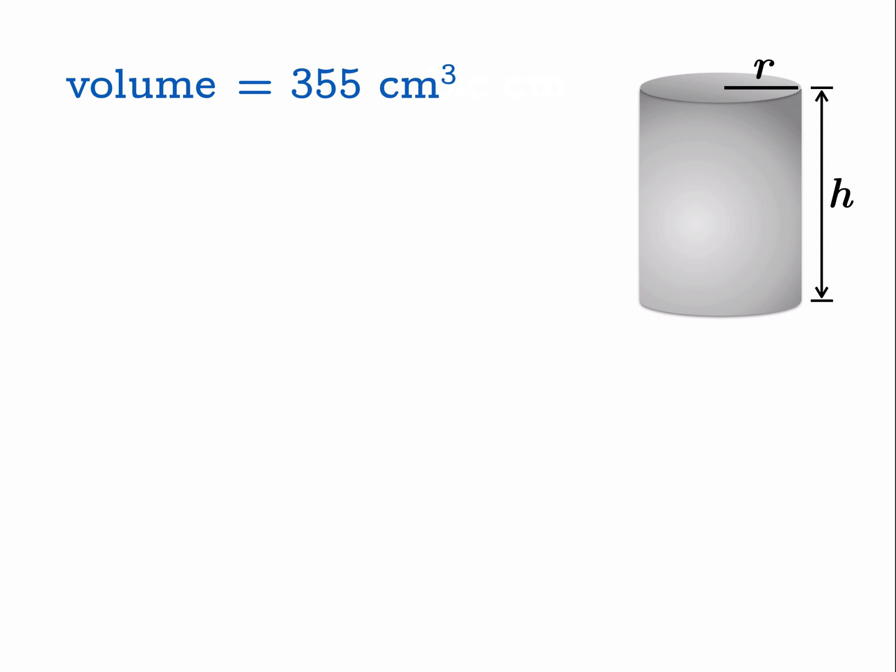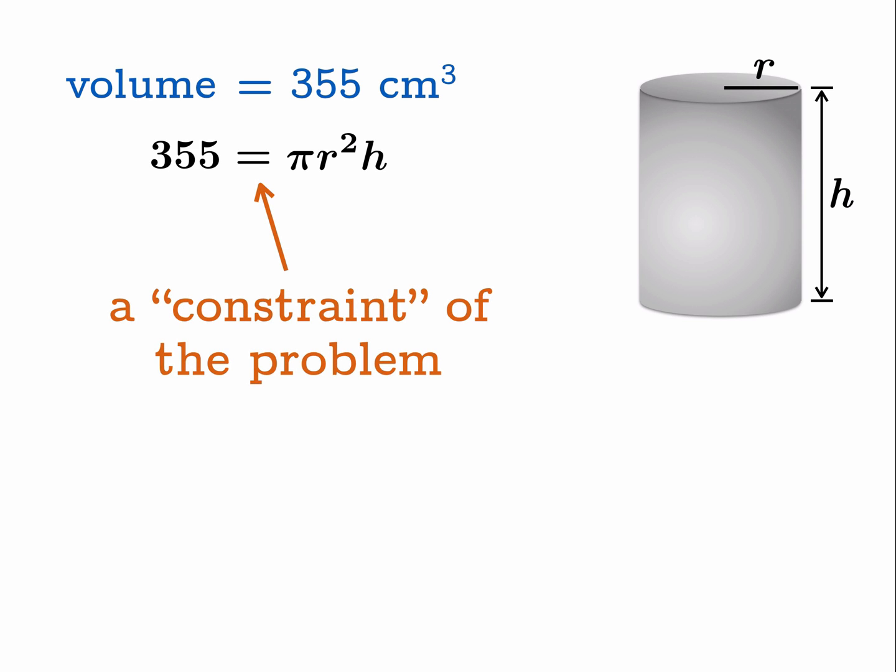Now the volume of a can is going to be the area of the base, pi r squared, multiplied by the height. So in this case the volume has to be 355 cubic centimeters. This equation is called a constraint—it's something that relates r and h. You can't just choose the radius and the height willy-nilly; they have to be related to each other by this equation.